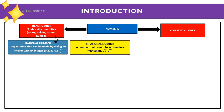Now focus on real numbers. There are two types: rational numbers and irrational numbers. A rational number is any number that can be made by dividing an integer by an integer, for example 0.23 or negative 0.61 over 4. An irrational number is a number that cannot be written in fraction form, for example pi, square root of 2, and square root of 3.